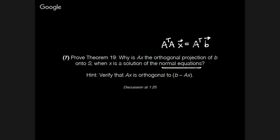And so your job is to take a stab at proving that if this is true, then Ax is the orthogonal projection. And the hint is, all you need to do is verify the orthogonality of Ax to B minus Ax, and just to quickly sketch a diagram of what that looks like.